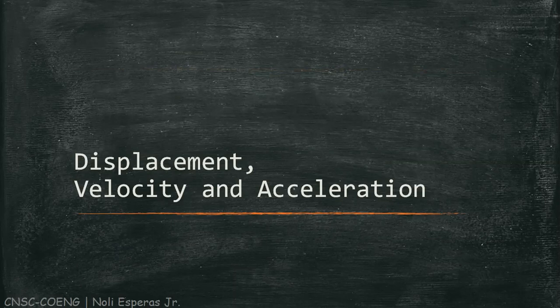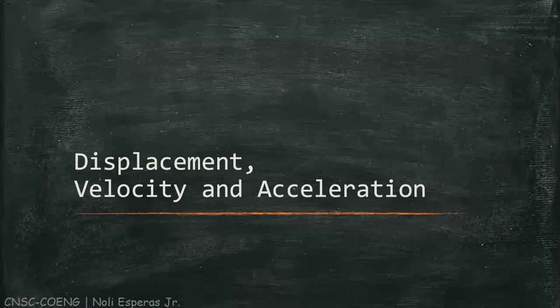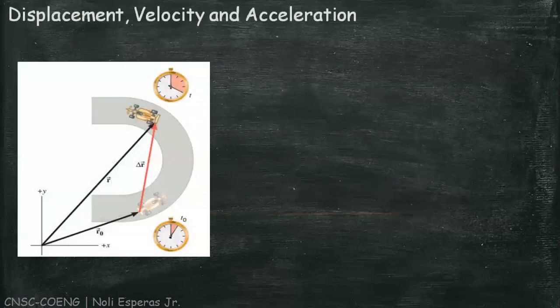Let's discuss displacement, velocity, and acceleration. In the previous week, the concepts of displacement, velocity, and acceleration were used to describe an object moving in one dimension. There are also situations in which the motion is along a curved path that lies in a plane. Such two-dimensional motion can be described using the same concepts. The displacement of the car in the figure is drawn from the initial position r-naught at time t-zero to the final position r at time t.